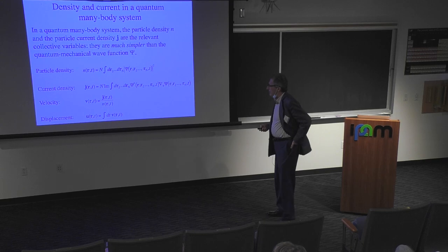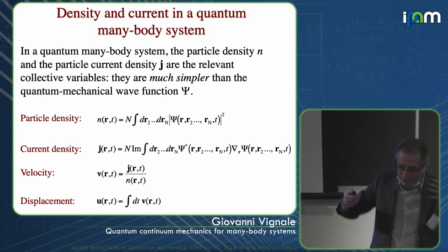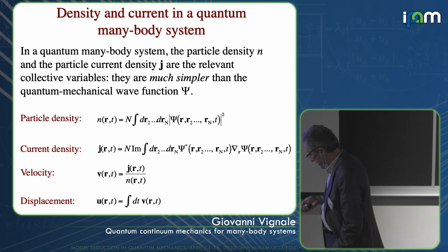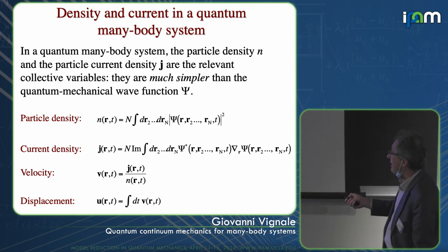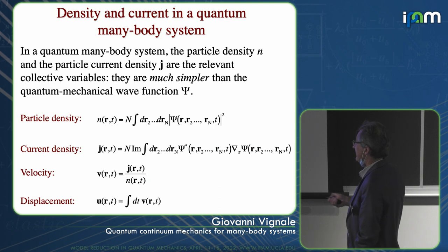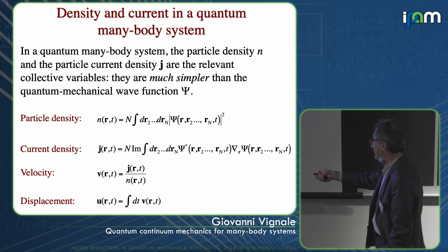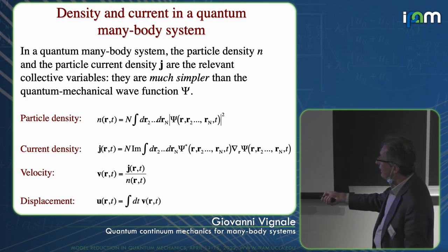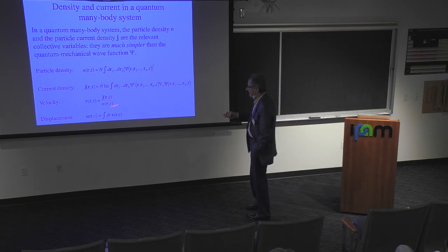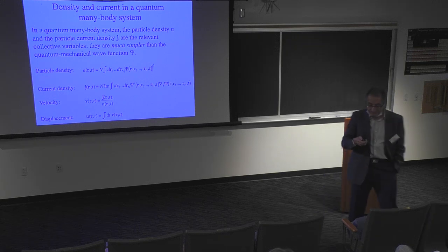The fundamental object in quantum mechanics is the wave function, which is again a kind of monster — very complicated. But the reduction will take us to much simpler variables. One of them is the density, which is the integral of the square of the wave function over all coordinates but one. Then there is the current density, defined with the gradient of the wave function but again integrated over all variables but one. You can also define a velocity field, which is the current density divided by the density, and a displacement field, which is the integral over time of the velocity field.